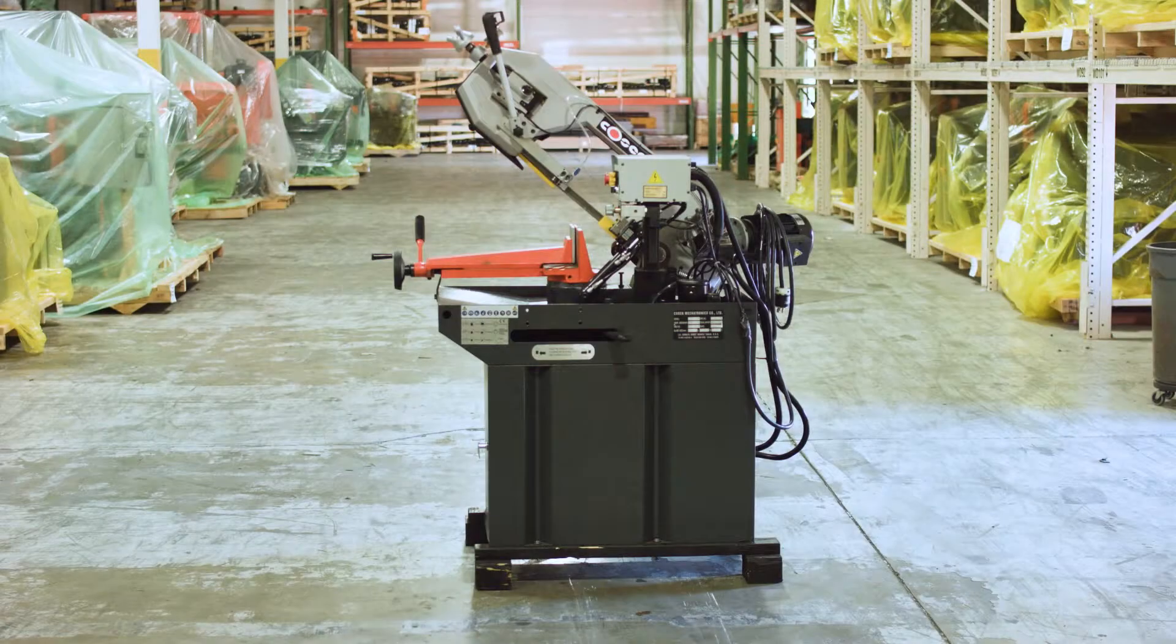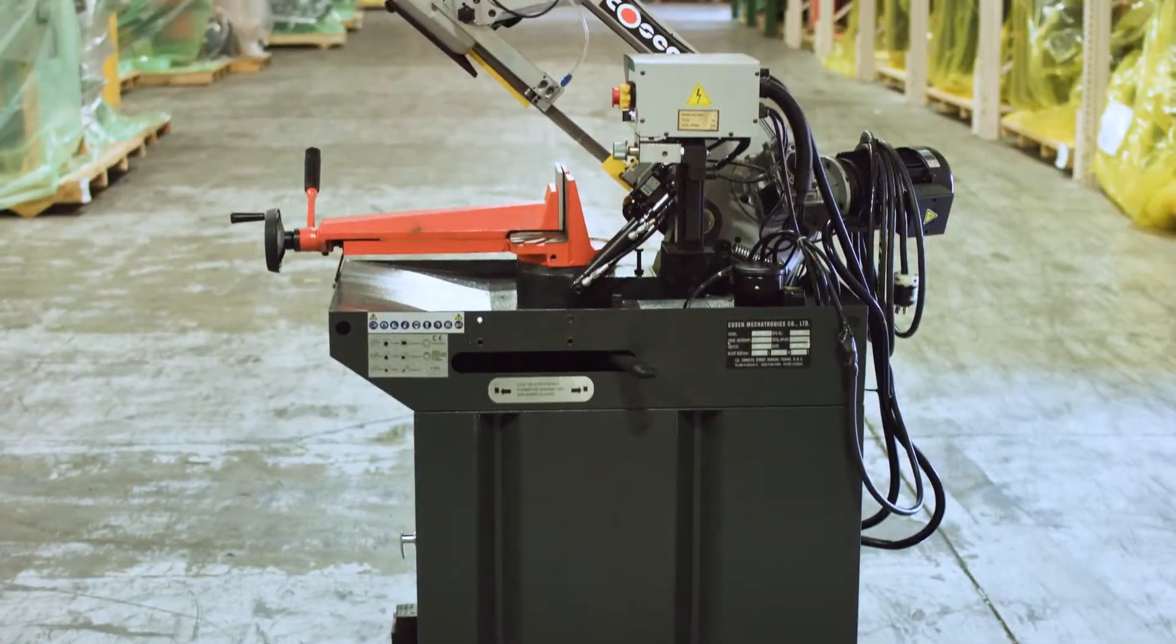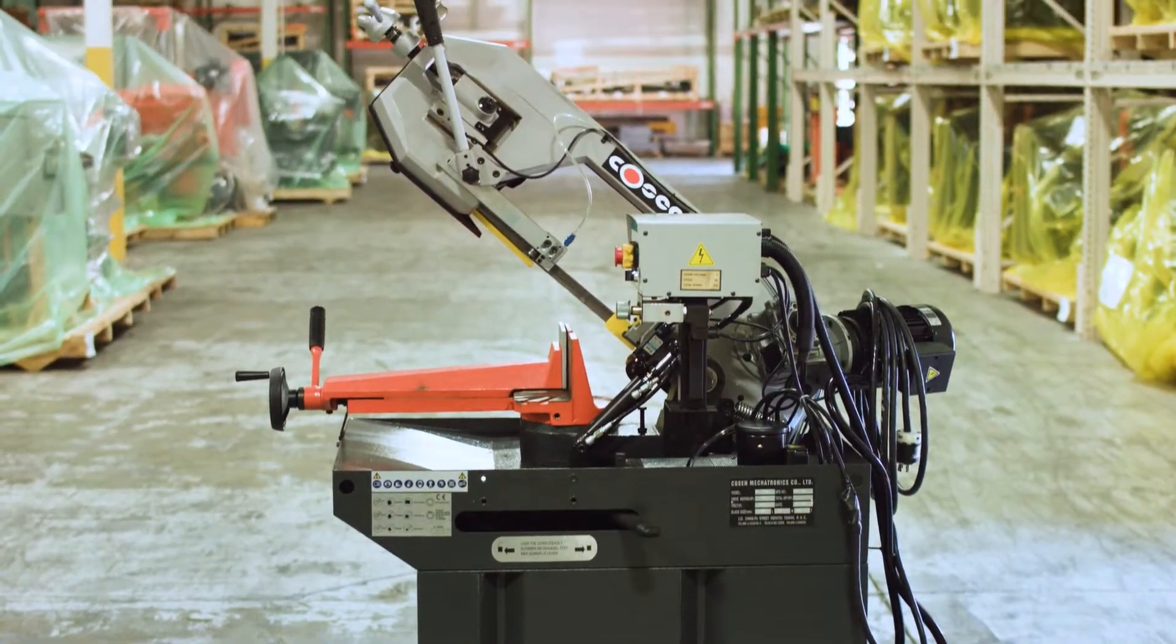The Kozen MH270M is a manual horizontal pivot mitering bandsaw, which has a round capacity of up to 8.9 inches and a rectangular capacity of up to 6 inches high and 9.45 inches wide.